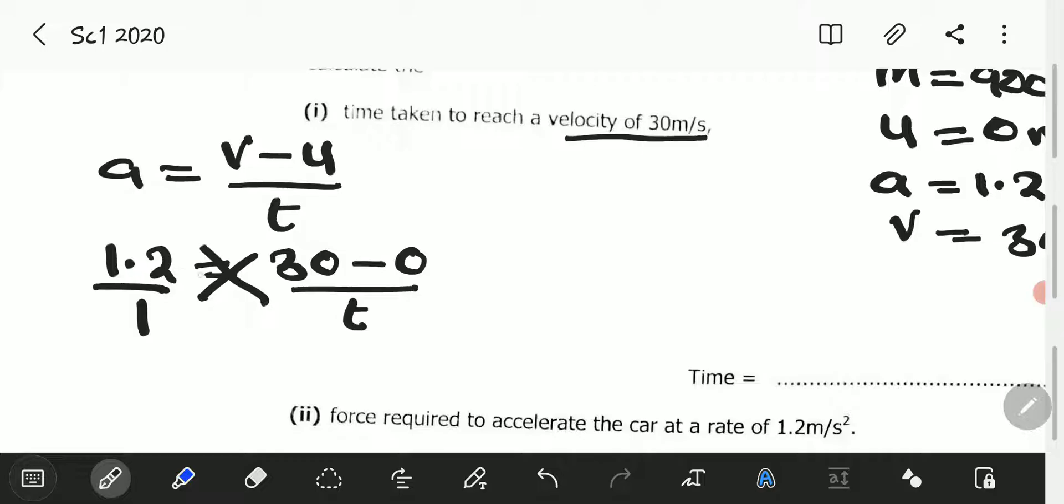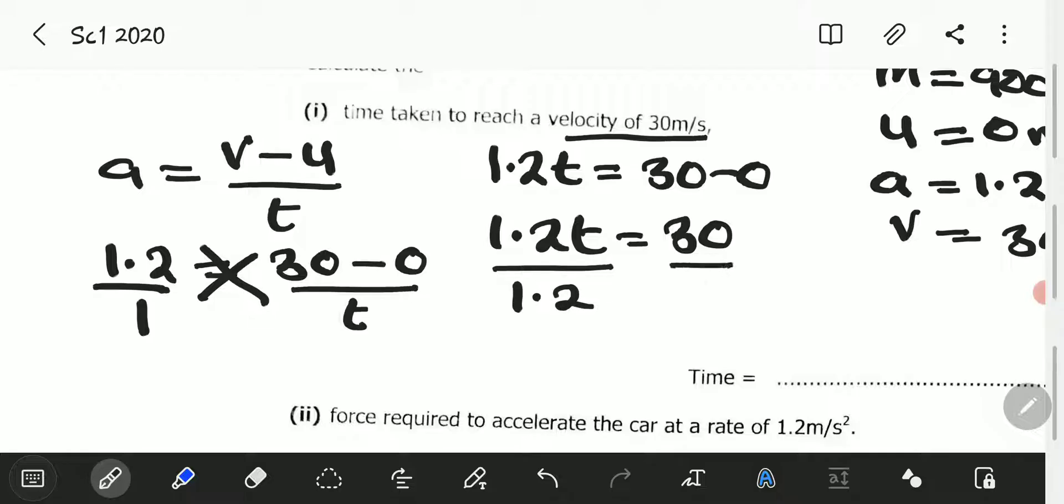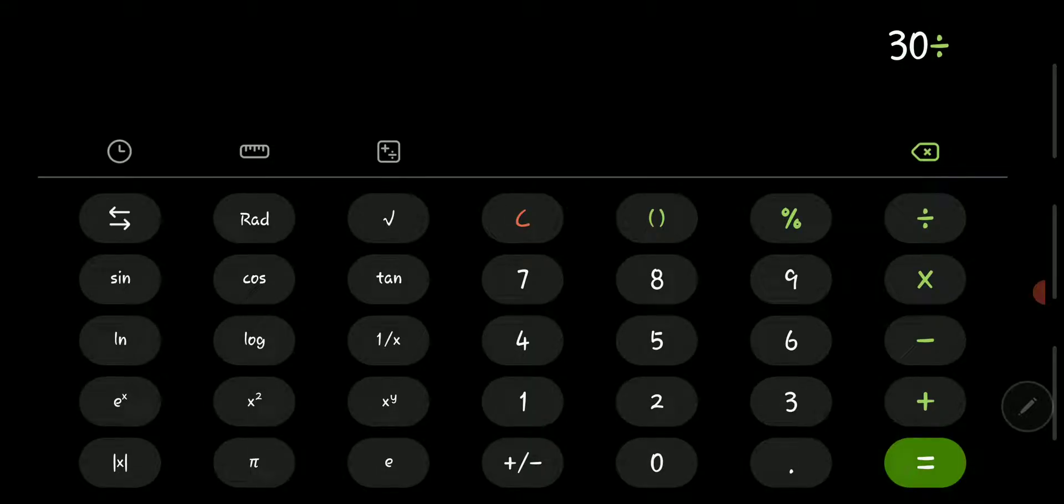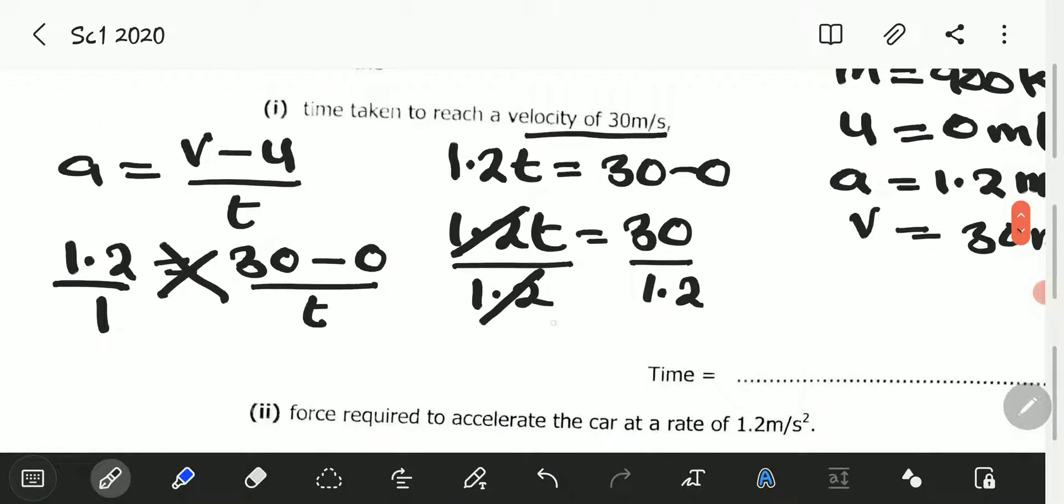We cross multiply, so it is going to be 1.2 multiplied by T which will equal 30 minus 0. 1.2T is equal to 30. Divide both sides by 1.2, and 30 divided by 1.2 gives us 25. T is equal to 25 seconds.